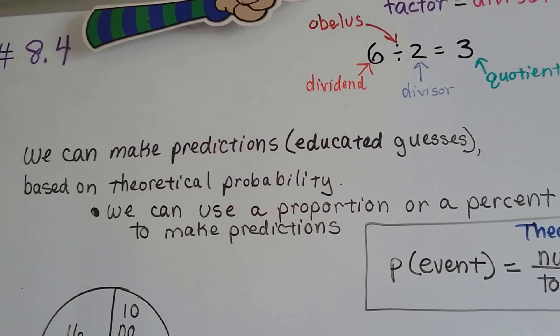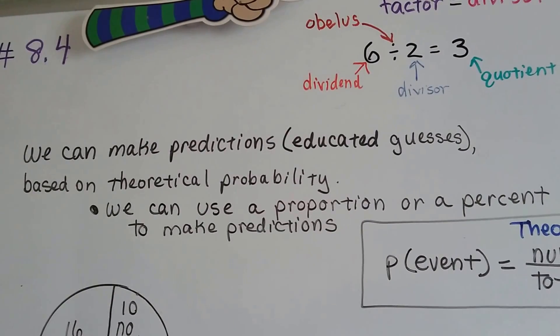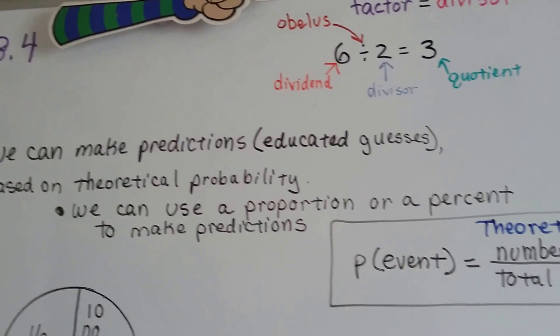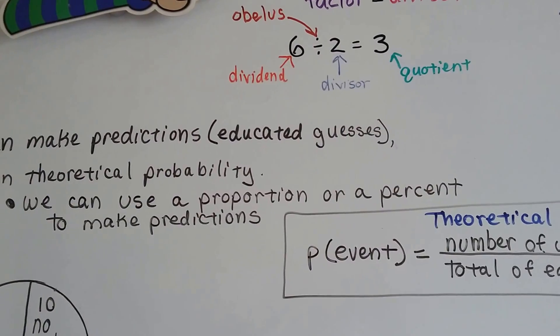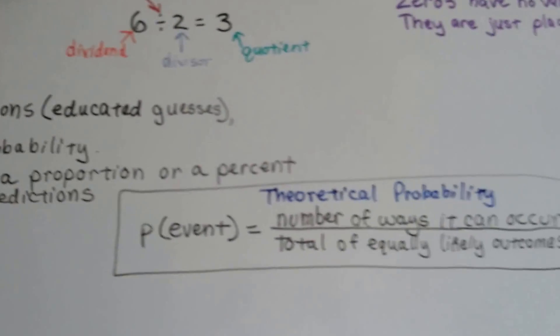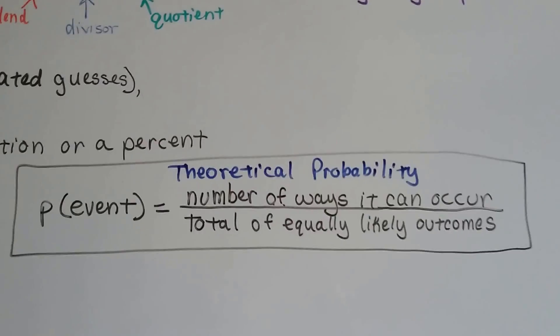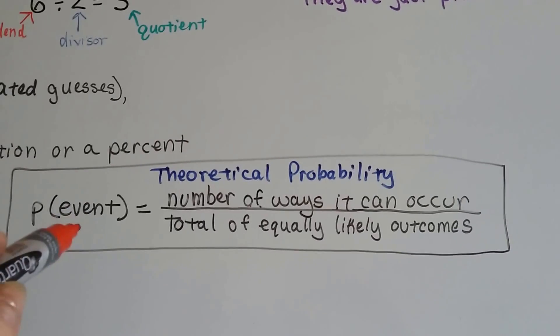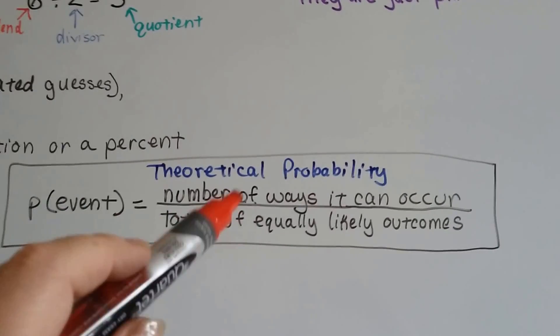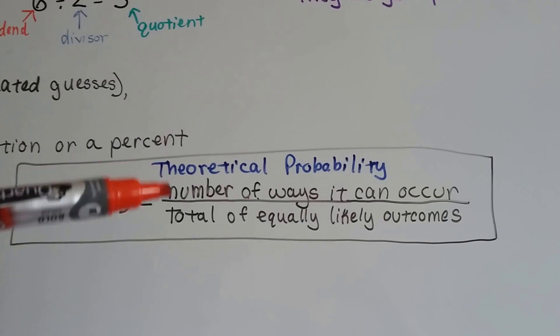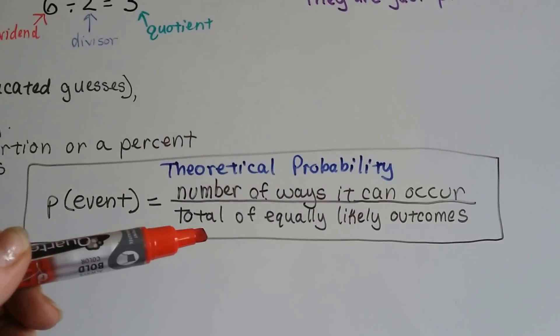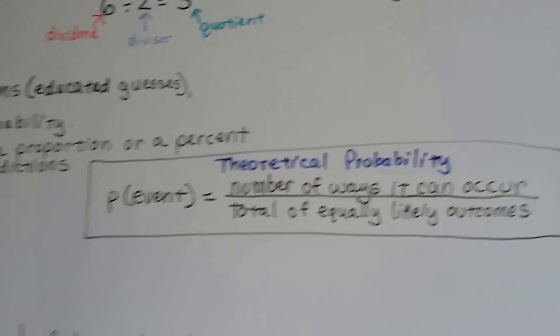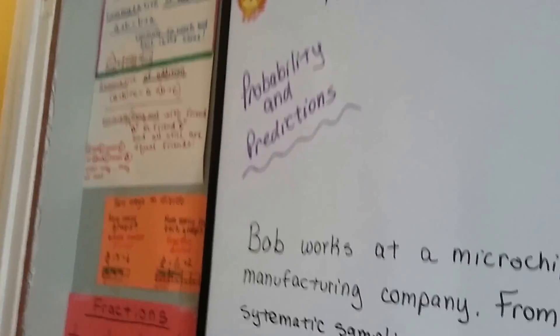We've been talking about theoretical and experimental probability over the last few videos. We can use a proportion or a percent to make predictions. Remember, theoretical probability P(event) equals the number of ways it can occur over the total of equally likely outcomes. It could either be a ratio or proportion, or it could be a percent.